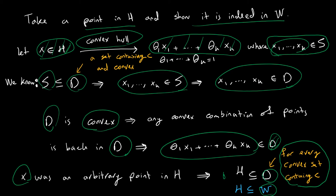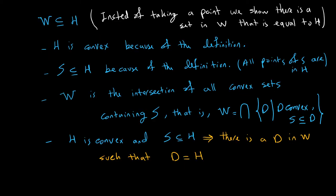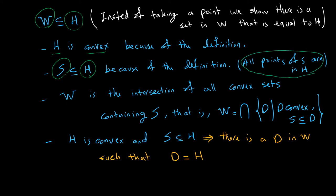To show the second inclusion W ⊆ H, I will take a different approach. First, let me remind you that H is convex, because H is the convex combination of all such points in S. Also, S is contained in H, because H has all the convex combinations of points in S, so H contains all the points in S. What I just showed is that H is a convex set and S is in H. Now all the sets we had in W were convex sets that contain S.